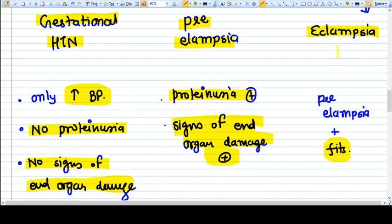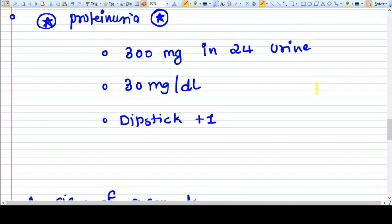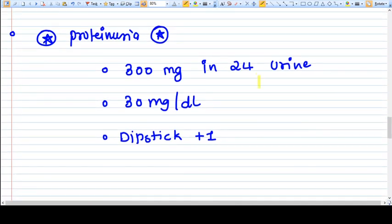When we say proteinuria, we mean 300 mg of proteins in 24-hour urine, or 30 mg per deciliter of proteins in urine, or dipstick test positive plus one. This is proteinuria.